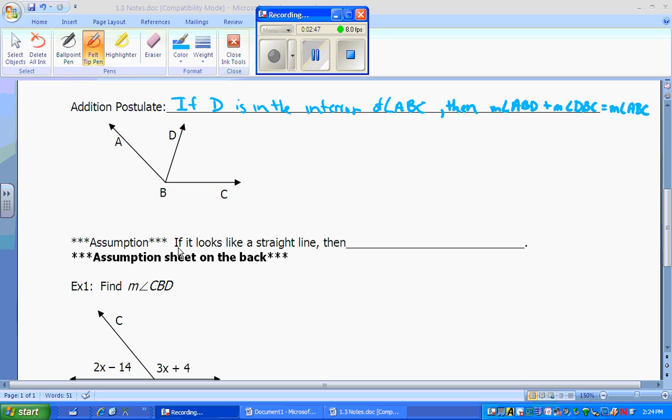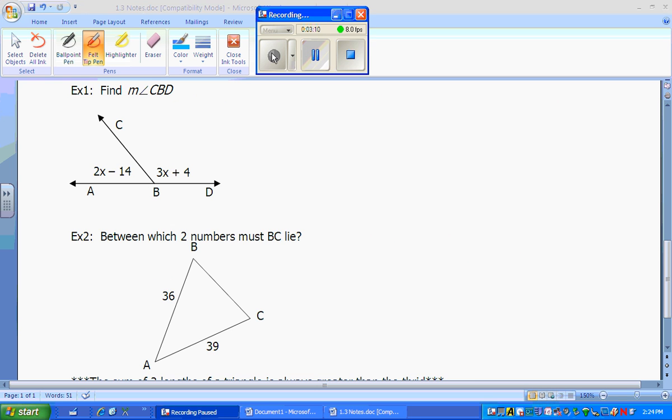Assumptions: If it looks like a straight line, then it is a straight line. If it looks straight, it is going to be straight. There's no confusion about that. There are more assumptions on the back of this sheet that you will have to memorize.